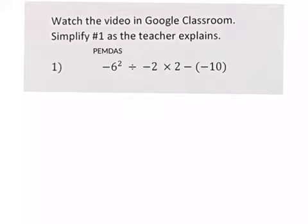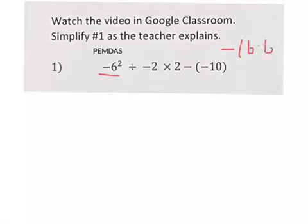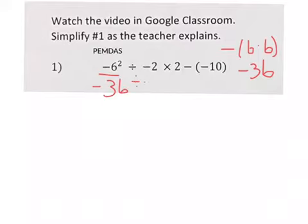We cannot forget our PEMDAS. Going from here, we're going to look at our exponent first. This is not negative 6 squared — it is the opposite of 6 squared. So 6 times 6 is 36, meaning it's the opposite of 36, or negative 36. So we have negative 36, and then we write everything else the same.